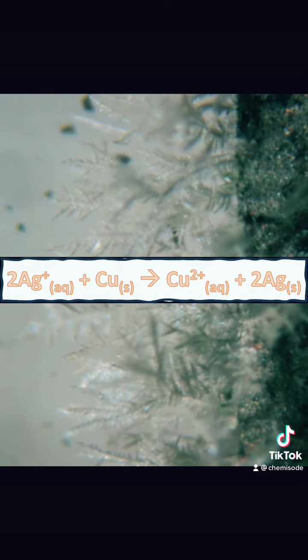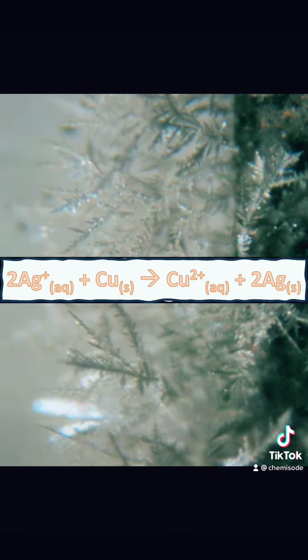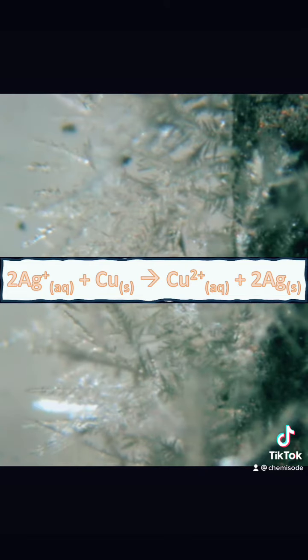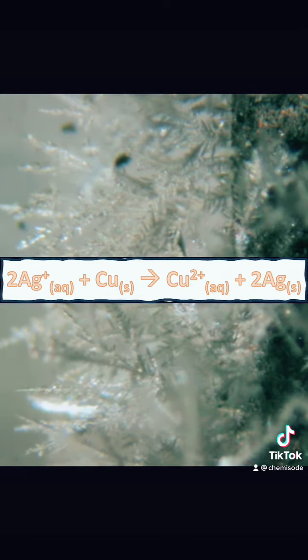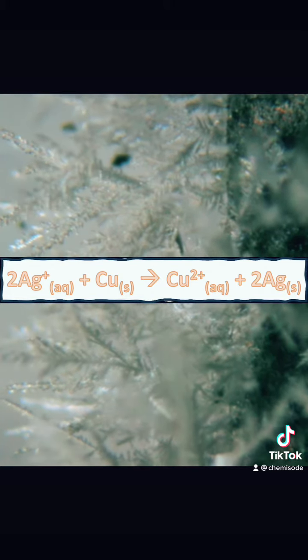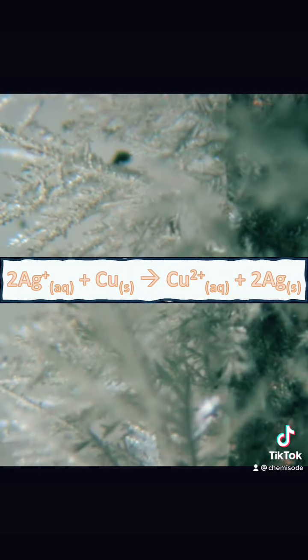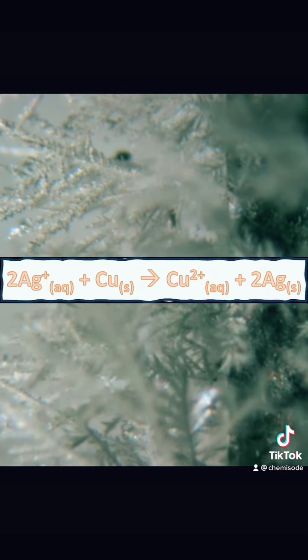This is a redox reaction. What is being oxidized? What is being reduced in this equation? Well, these silver ions have an oxidation number of +1 because it's a +1 ion. That is being decreased to 0 on the right-hand side as silver solid, because silver as an element has an oxidation number of 0.